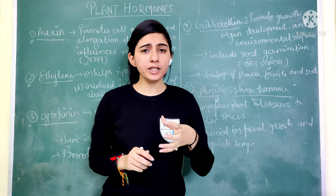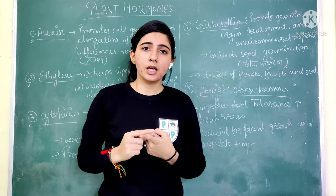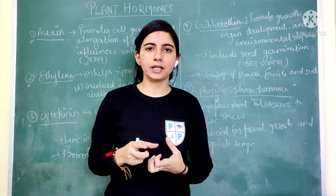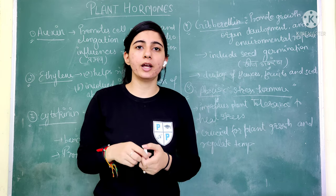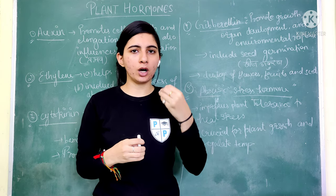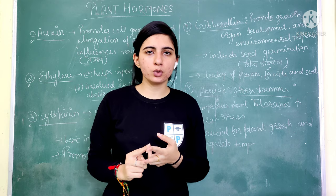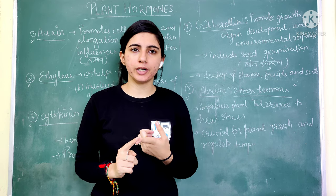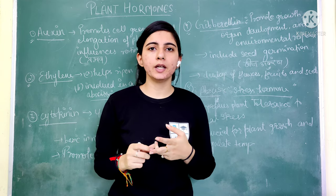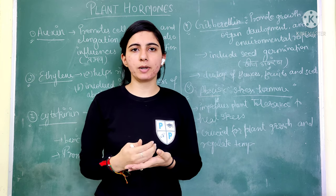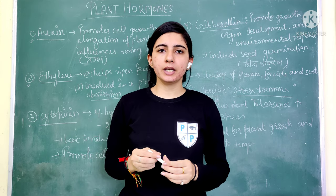The next point about Auxin is its influence on root formation — it helps provide root formation. Roots are very important in plants: they anchor the plant in the soil so plants don't move, and through xylem and phloem, roots help transport nutrition throughout the plant. So Auxin promotes cell growth, elongation in the upward direction, and influences root formation.